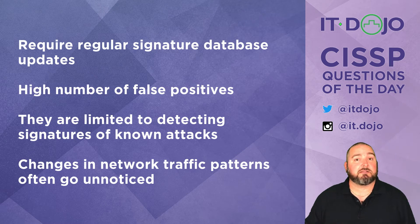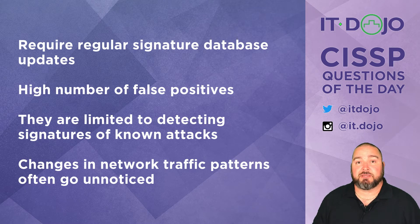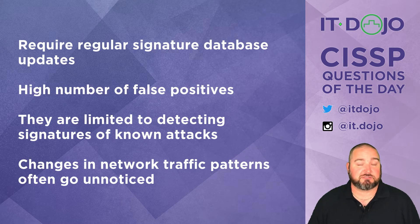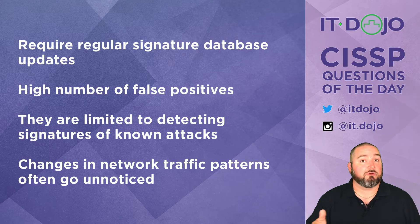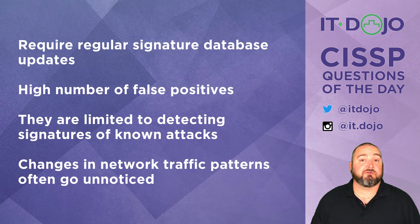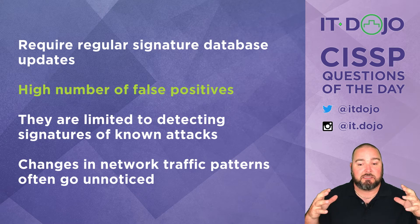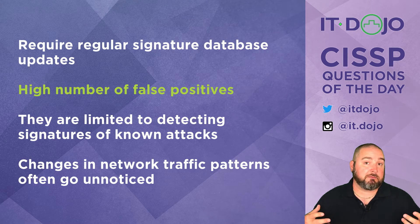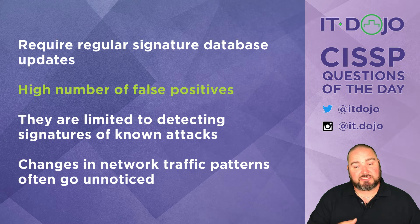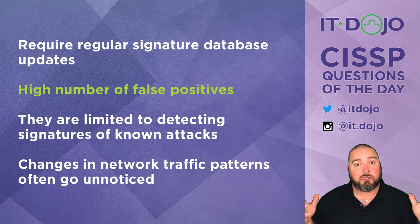The first option says anomaly-based systems require regular signature updates to the signature database — that's actually not true. That's a characteristic of knowledge-based intrusion detection systems, not anomaly-based (also called behavior-based) systems. The second option is that you get a high number of false positives — this is absolutely the right answer. Anomaly-based systems look at their definition of what is normal on the network by learning from observed traffic, and changes in your network can suddenly cause an event to fire off saying something's potentially wrong when in reality it's just a change from the baseline.